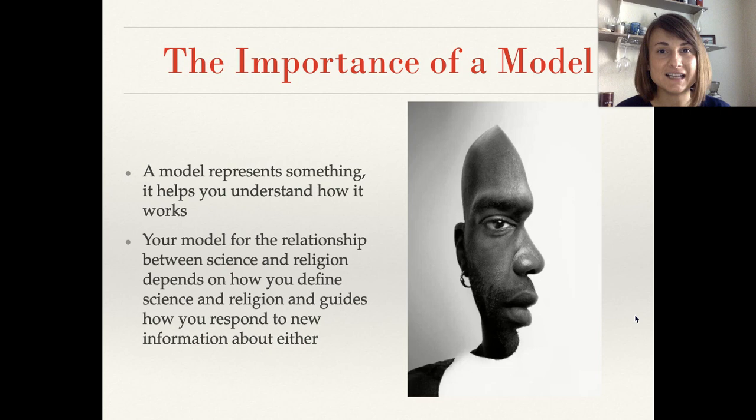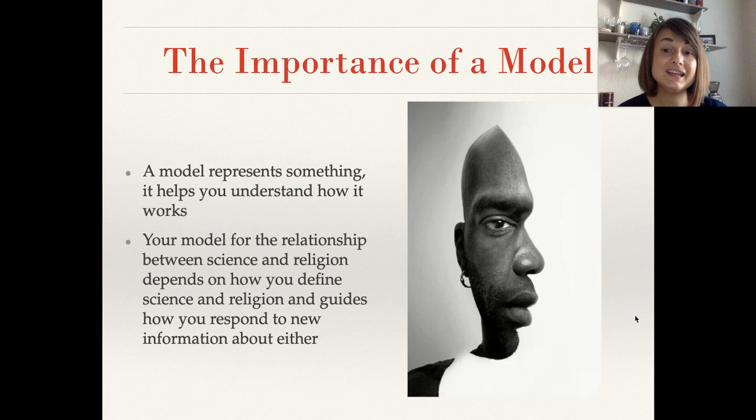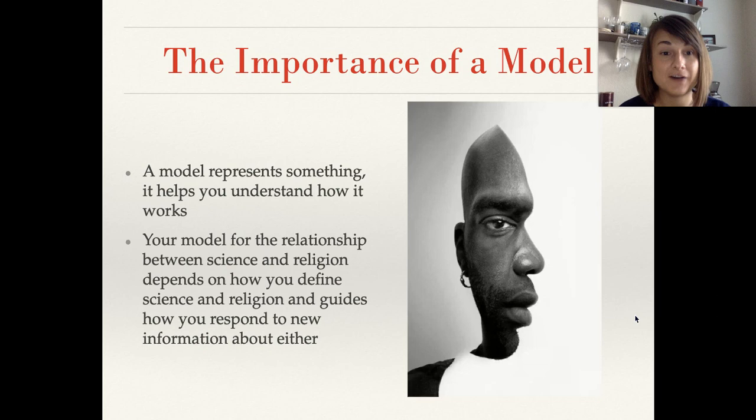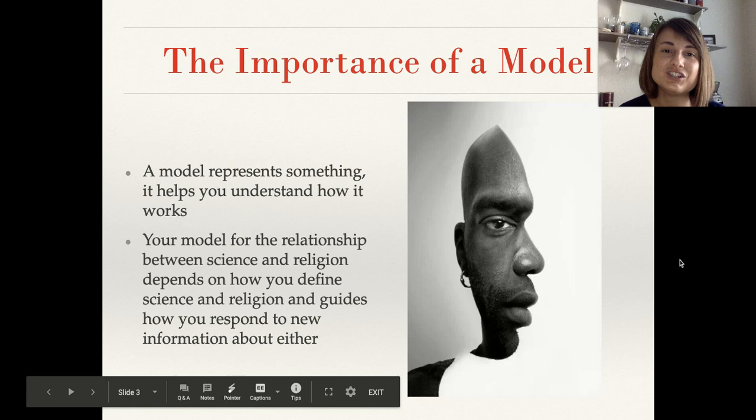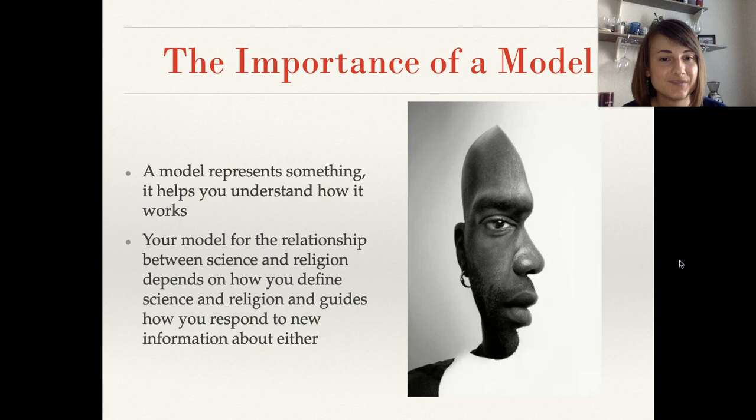When we're talking about a model of the relationship between science and religion, it's a sort of simplified, fundamental description of the type of interaction they have. What your model is depends on a couple of things: how you define science and how you define religion, and it will guide you on how you respond to new information about either. I put this optical illusion picture here because I think it does a really good job of demonstrating why your model of the relationship between science and religion matters.